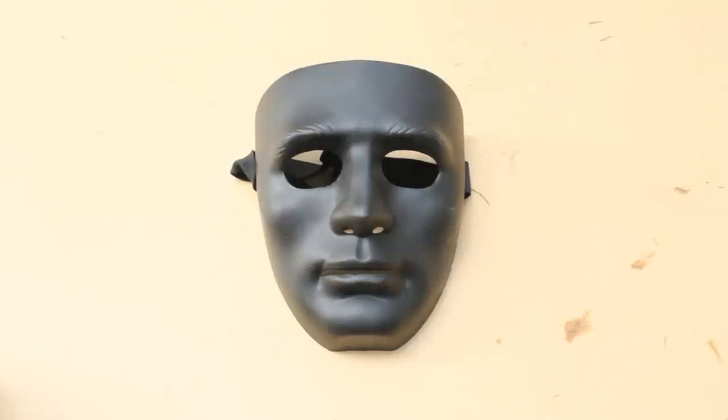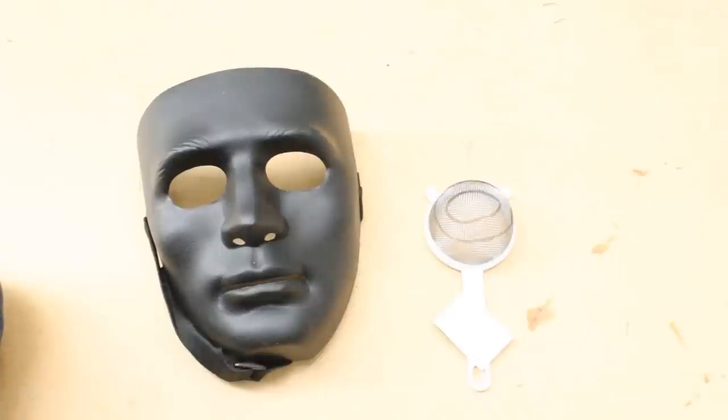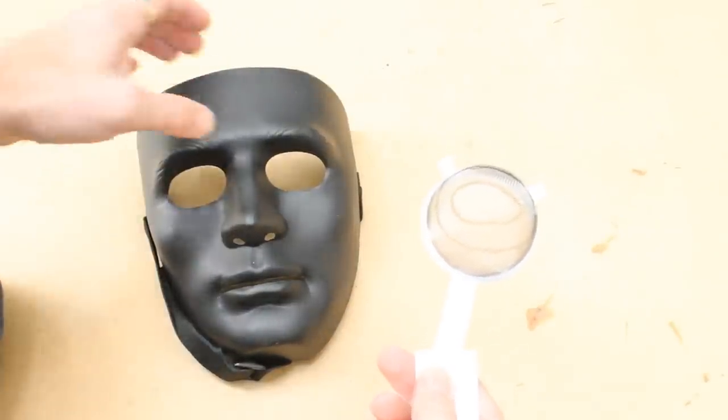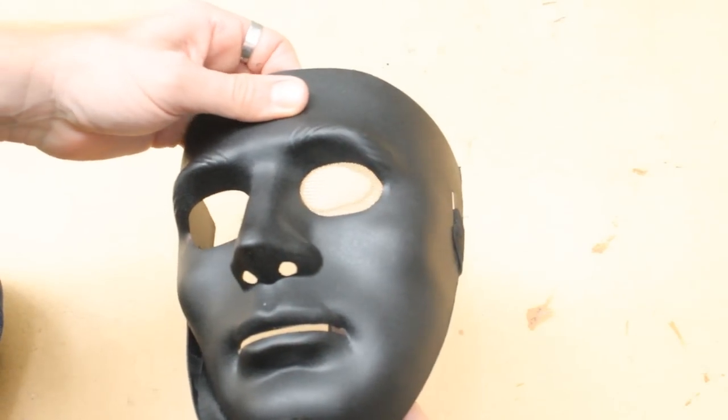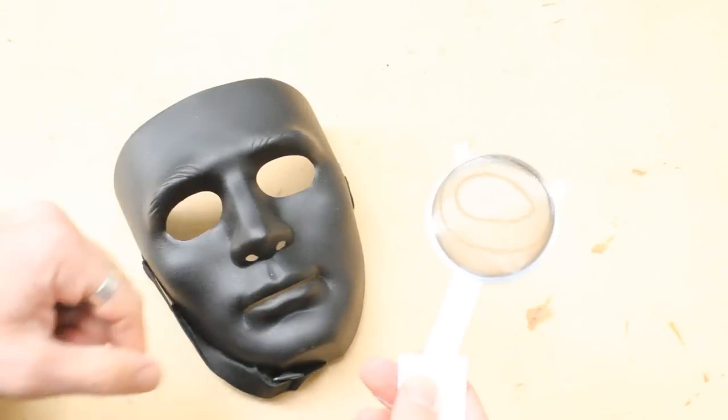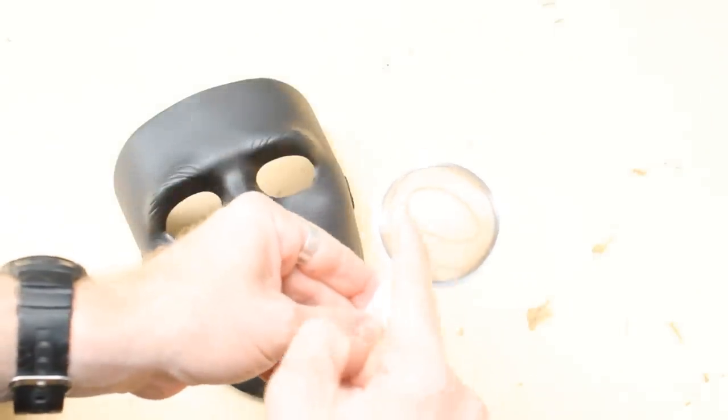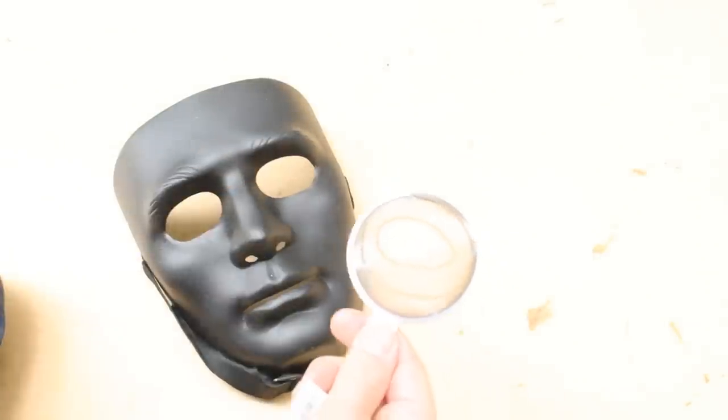The basis for our mask is a simple blank bought from the internet. Firstly, I'm going to fill in the eye sockets using this metal mesh from a tea strainer. Putting the tea strainer inside the mask and drawing out the shape of the eye, I can actually get the idea of the area that I need for the eye itself.